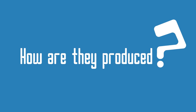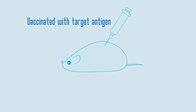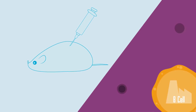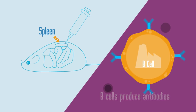So how are they produced? Well, first off, we need an immune system, which is why we use mice. In a laboratory, a mouse is vaccinated with the target antigen. This stimulates the B cells found in the spleen to produce antibodies against the target antigen.